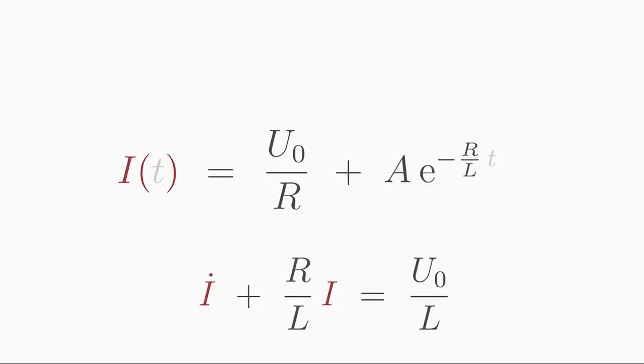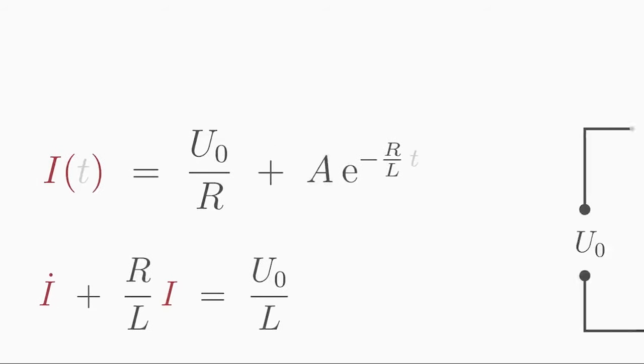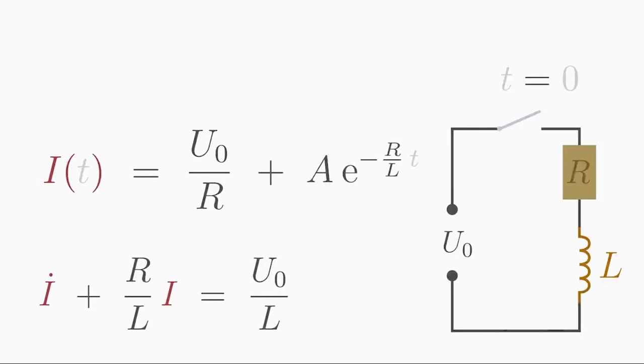To get a solution specific to the problem we need to determine the unknown constant A. For that we need an initial condition. If we say that the time T equals zero is the time when the current I was zero because we have not yet closed the switch, then our initial condition is I of zero equals zero.